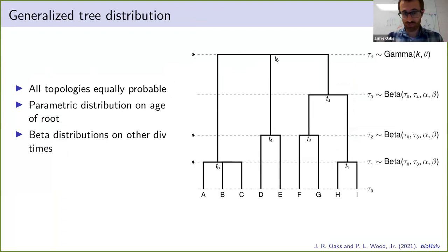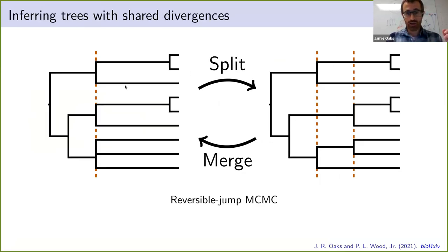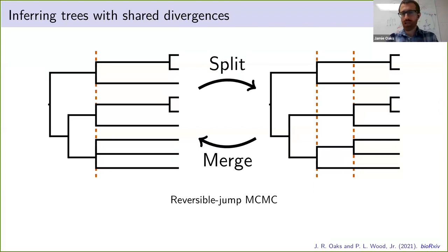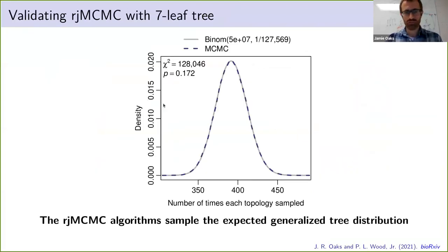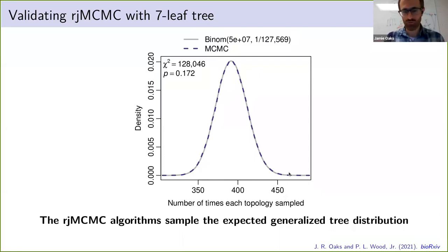With a distribution over this expanded tree space, we need to do inference with it. We took a Bayesian model averaging approach using reversible jump Markov chain Monte Carlo, which is computational machinery that allows us to sample among different trees with different numbers of divergence time parameters. We did a lot of validation tests — one test with seven tips was set up so that if the algorithm is working correctly, the number of times each possible tree is sampled should follow a binomial distribution. And our MCMC samples do very nicely, confirming we didn't screw up in implementing our algorithms.